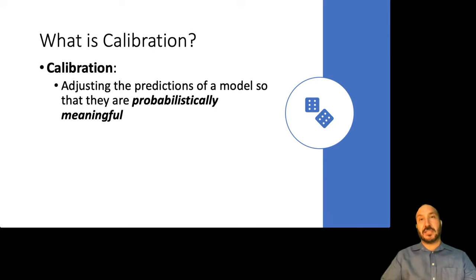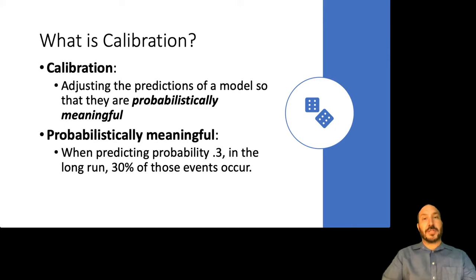So what is calibration? Calibration is adjusting the predictions of a model so that they're probabilistically meaningful. And probabilistically meaningful, in this case, we mean, for example, when the model predicts a probability of 0.3. If we look at all the times that the model predicted 0.3 or pretty darn close to 0.3, in the long run, about 30% of those events should occur. If that happens, then the model is well calibrated. The probabilities are behaving like probabilities. If that doesn't happen, then the model is not well calibrated.